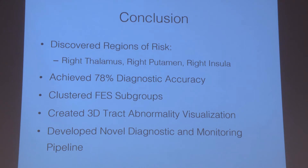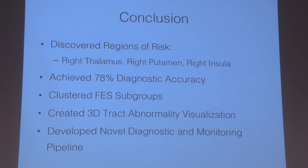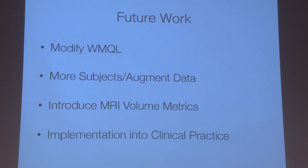In conclusion, the study discovered three new regions of risk — the right thalamus, right putamen, and right insula — with quantified prognostic value for schizophrenia. We achieved 78% diagnostic accuracy from random forest algorithms, successfully created first-episode schizophrenia subgroups via clustering, and created a three-dimensional tract abnormality visualization providing a new monitoring paradigm for early schizophrenia. This was all brought into a novel diagnostic and monitoring pipeline that could potentially prevent millions of schizophrenia patients from dying by suicide through quantification.